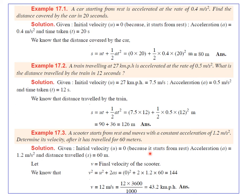Problem 3: A scooter starts from rest and moves with constant acceleration of 1.2 m/s². Determine the velocity after it has traveled 60 meters. Since it starts from rest, u = 0; a = 1.2 m/s²; s = 60 m. Using v² = u² + 2as, substituting all values, we get the final velocity as 43.2 km/h (approximately 12 m/s).